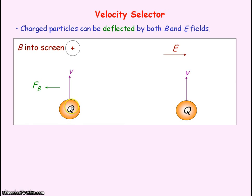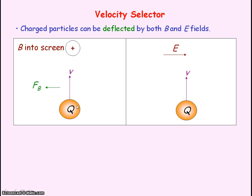Because the velocity is always perpendicular to the magnetic flux density, the force will always be perpendicular to the velocity of the charge. And so the charge will follow a circular path.